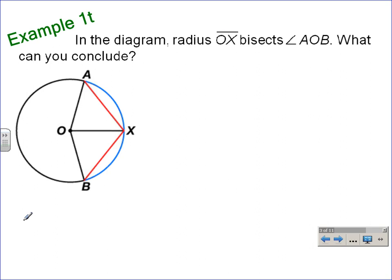Our first example here, example 11. In the diagram, the radius segment OX bisects the central angle, angle AOB. What can we conclude? Let's take a look at the diagram. This segment, segment OX, bisects this angle, angle AOB.